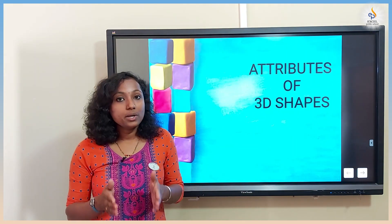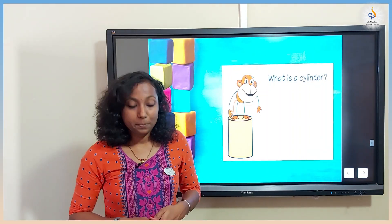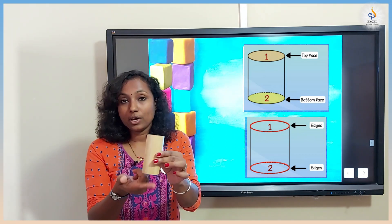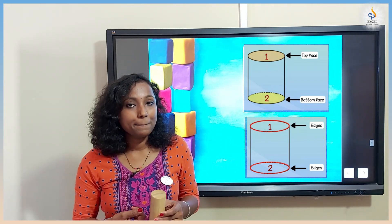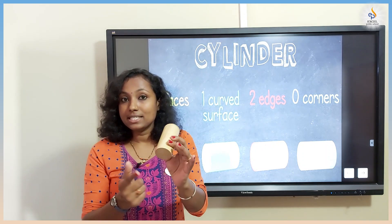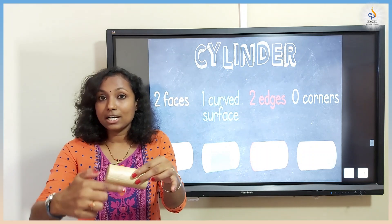Let's start with the 3D shape that is cylinder. What is a cylinder? A cylinder has two flat faces — one at the top and one at the bottom — two curved edges, and one curved face. Why don't you go and get an object which is cylindrical so that we can count together? A cylinder has two flat faces, two curved edges, and one curved face.